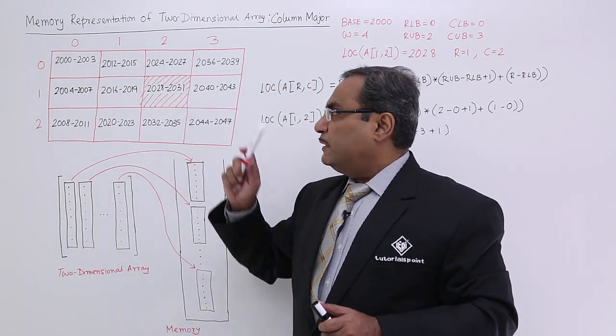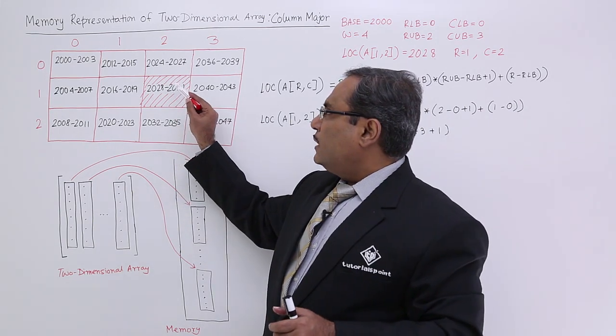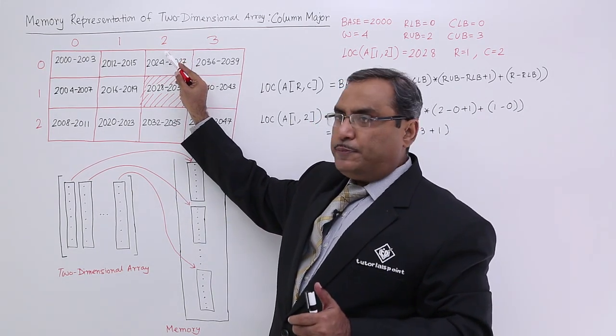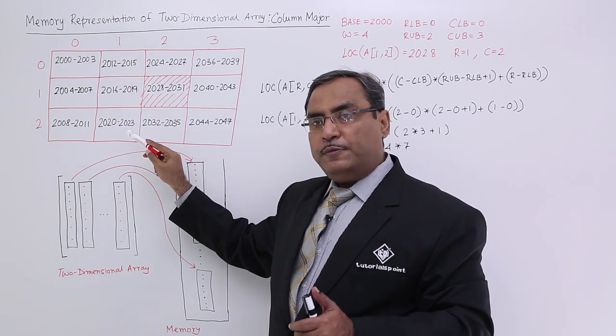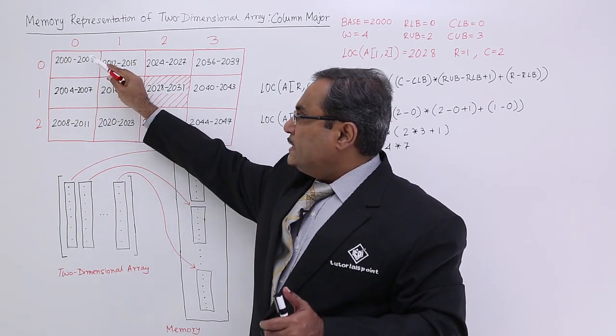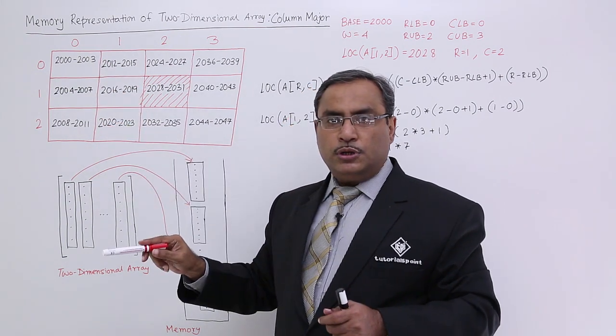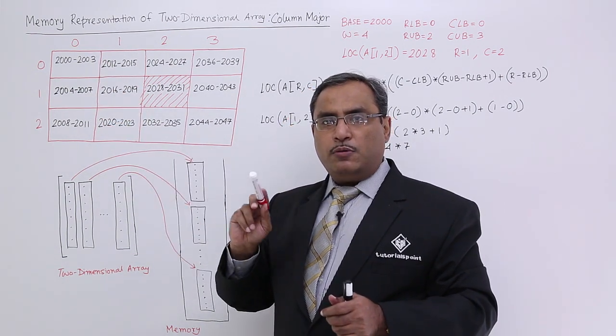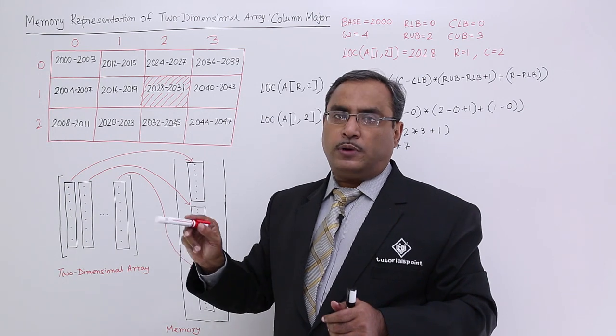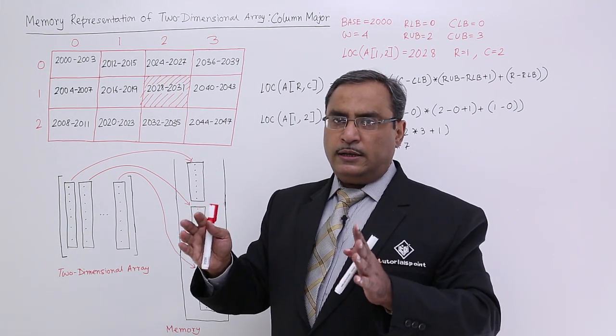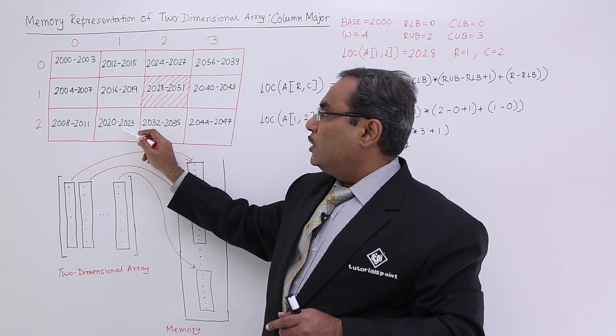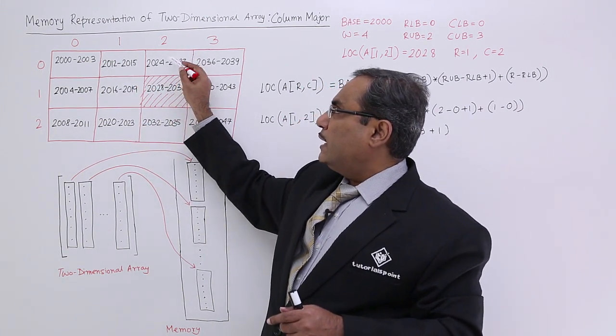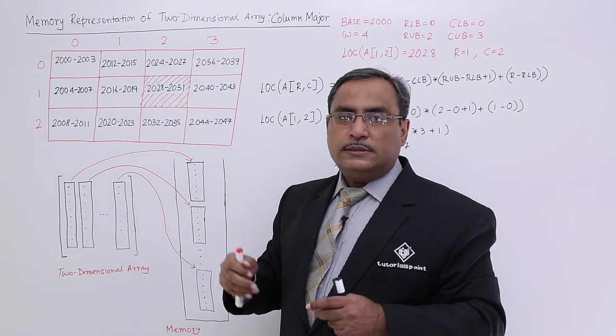If we consider this particular cell, that means when I am coming to this particular column, that means already I have traversed two columns. For each and every column, how many number of rows? There is rows upper bound minus rows lower bound plus 1. So that will decide the number of rows. So this number of rows I will be covering and then for this particular column, I shall go inside for some number of rows.